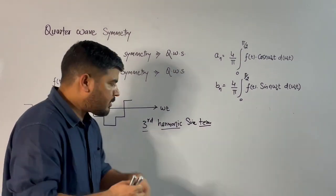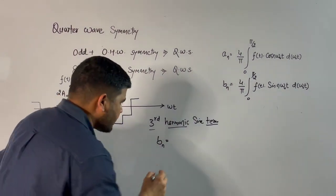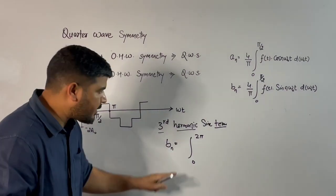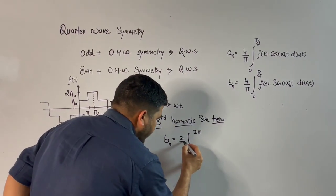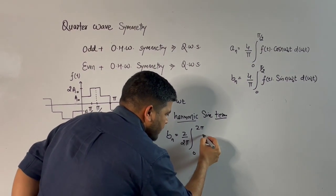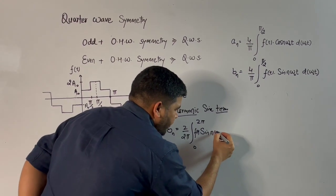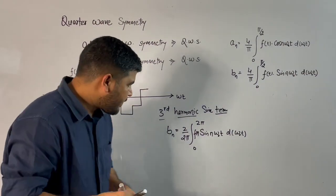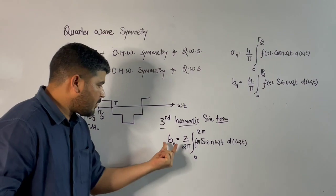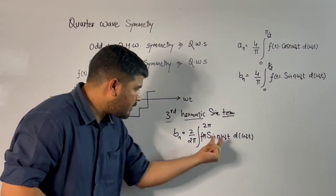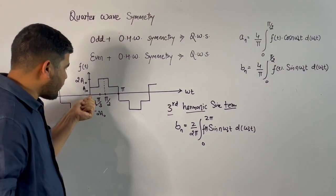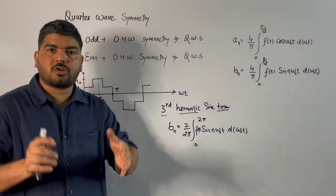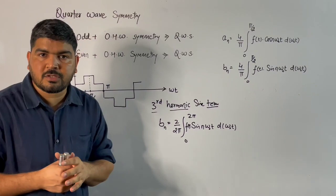To calculate the third harmonic sine term, first you have to calculate Vn. The formula for Vn is integration from 0 to 2π: (2 divided by 2π) times f(t) times sine of n·ωt d(ωt). This is the formula in radian argument. If you integrate this from 0 to 2π, it will be very lengthy because you have to break the integration into many parts: from 0 to π/3, then to the next point, then to π, and so on — many parts to solve.